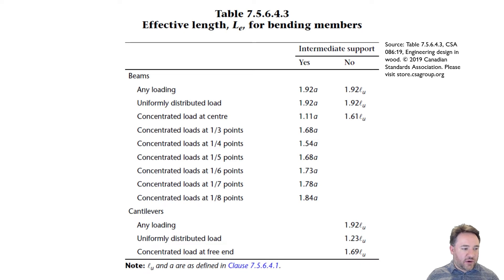If I have lateral support points, like purlins along the beam spaced at distance A, the beam can only buckle between those purlins, so we use A. If I have just a simply supported beam, my unsupported length is the total length of the beam. You can see we have different K factors like 1.92, 1.61, etc.